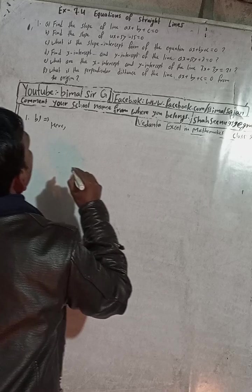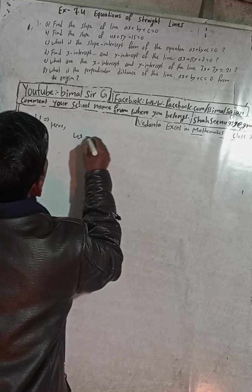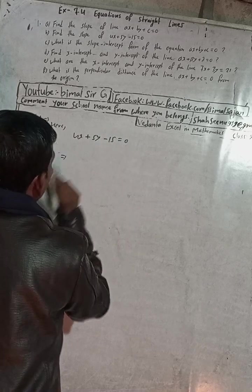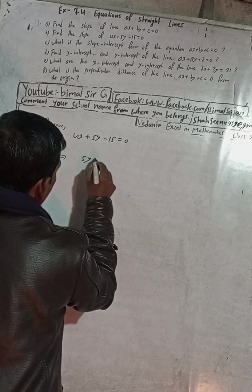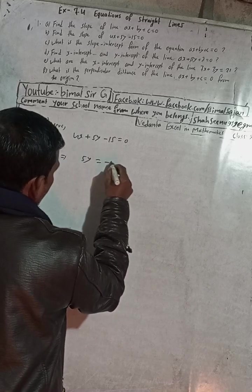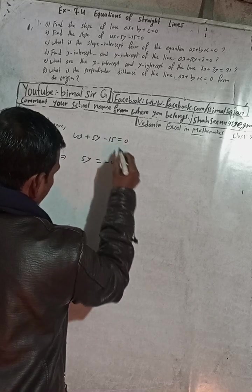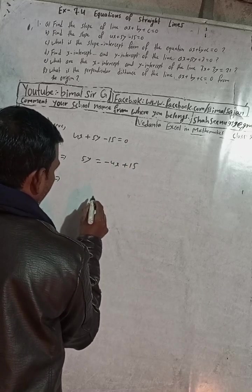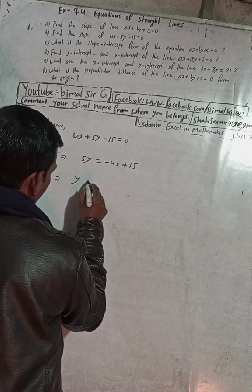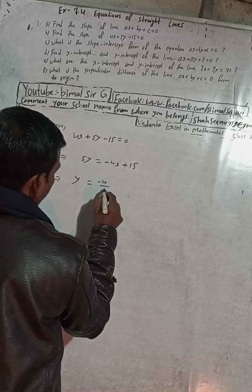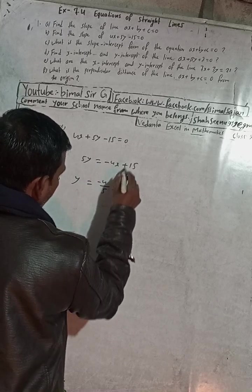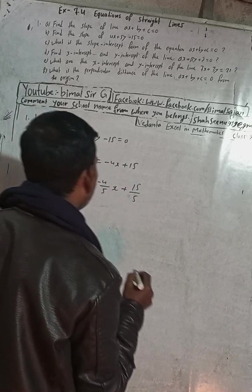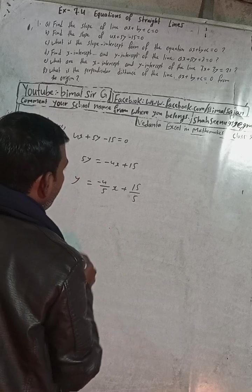Part (b): find the slope of 4x + 5y - 15 = 0. Keep 5y on the same side; move 4x to the other side as -4x, and -15 becomes +15. Then divide both sides by 5, giving y = (-4/5)x + 15/5.